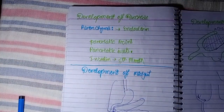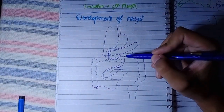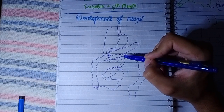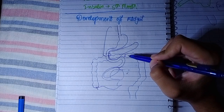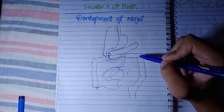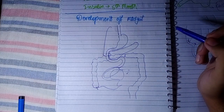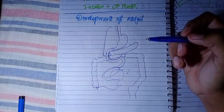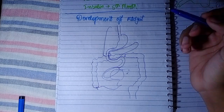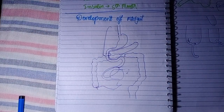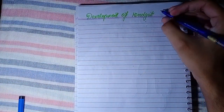Welcome to Medical Medics. Today our topic is development of the hindgut. We should know about hindgut derivatives. The hindgut gives rise to the left one-third of the transverse colon, descending colon, sigmoid colon, rectum, anal canal, epithelium of the urinary bladder, and most of the urethra. The blood supply is from the inferior mesenteric artery.